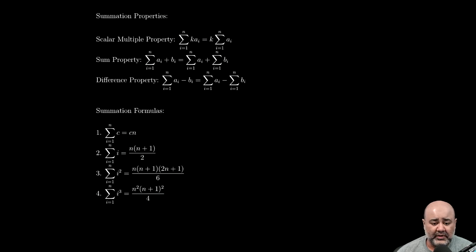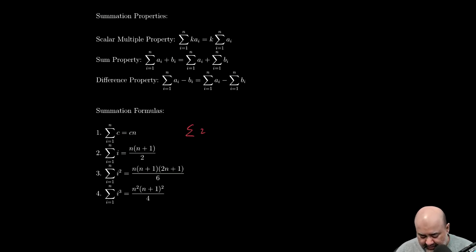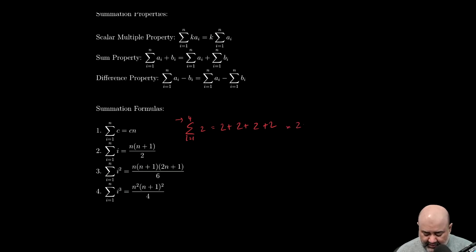Here are some known formulas to memorize. If you have a constant c, not c sub i or c times i, just c by itself, you're adding the constant n times. For example, the summation of 2 from i equals 1 to 4 means when i equals one add 2, when i equals two add 2, when i equals three add 2, so that's 2 times 4. The formula is c times n.